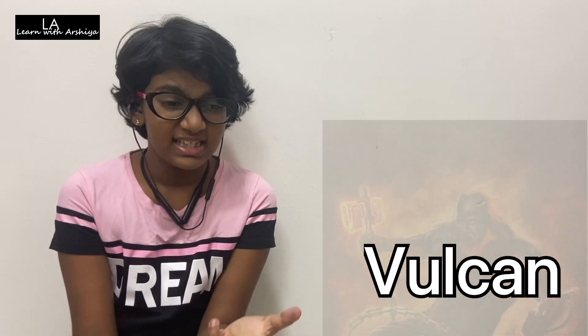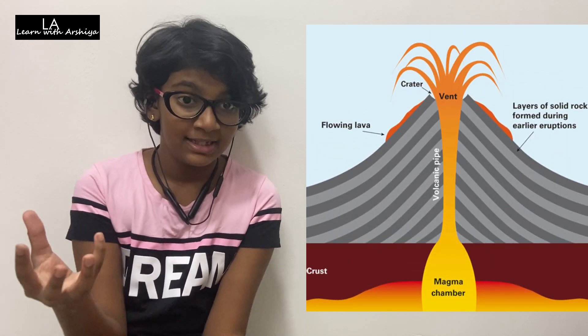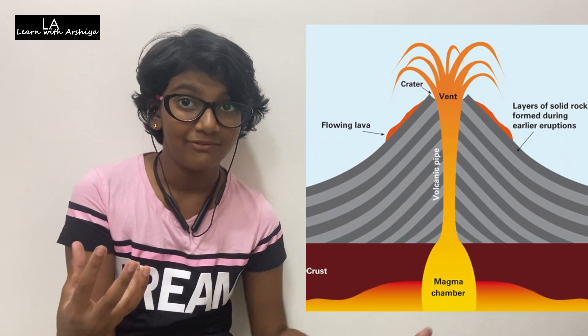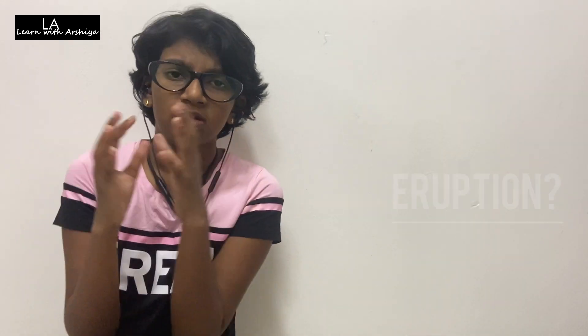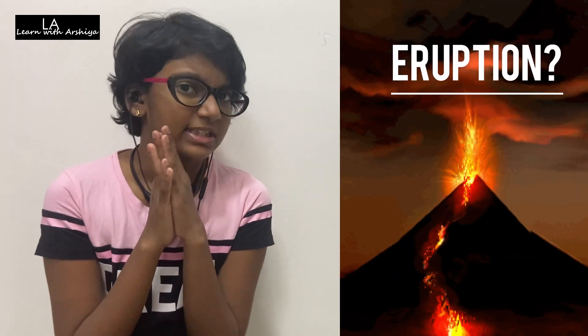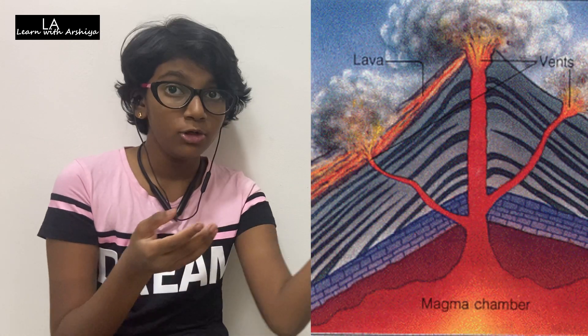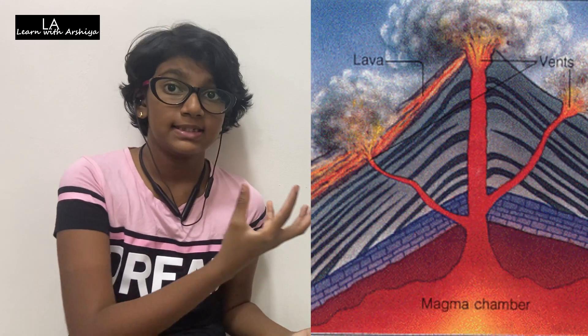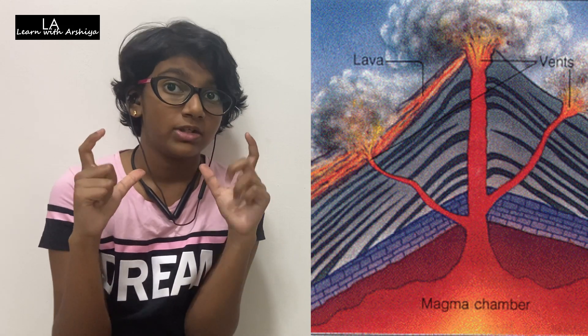A volcano is a vent or chimney that connects to the molten lava inside the Earth's crust. How does the eruption take place? The eruption takes place when the molten lava is collected inside a small chamber inside the Earth.